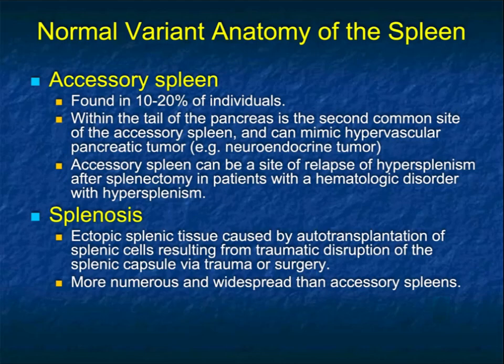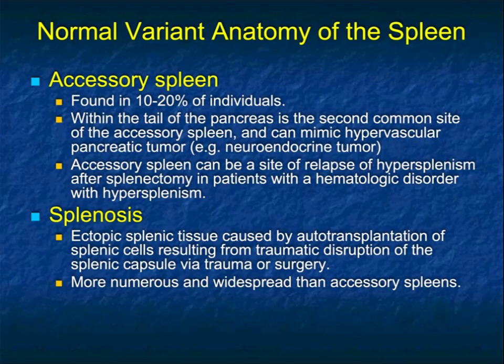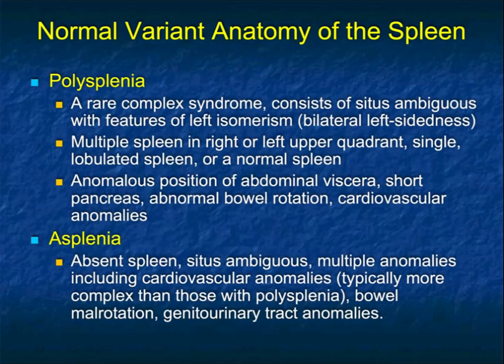Accessory spleens can be the site of relapse of hypersplenism after splenectomy in patients with hematologic disorders. Splenosis is typically associated with trauma — it's ectopic splenic tissue caused by autotransplantation of splenic cells from traumatic disruption of the splenic capsule. Most cases of splenosis we see are in patients who had traumatic splenectomies, though it can occur with splenectomy for other reasons. Sometimes when the spleen is removed, small accessory spleens enlarge and become more visible. Splenosis lesions tend to be more numerous and more widely distributed than accessory spleens.